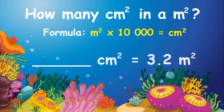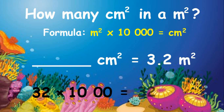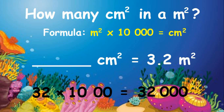What if the given square meter is a decimal? For example, 3.2 square meters. First, make 3.2 a whole number by moving the decimal point one place to the right. As we move one place to the right, we cancel one zero from ten thousand, making it one thousand. Then multiply: thirty-two times one thousand equals thirty-two thousand. Therefore, 3.2 square meters is equal to thirty-two thousand square centimeters.